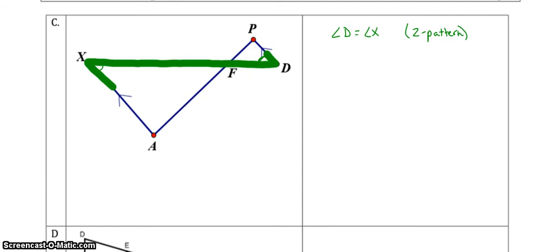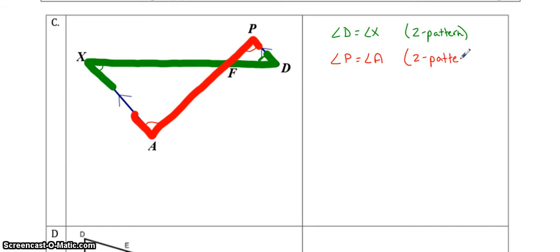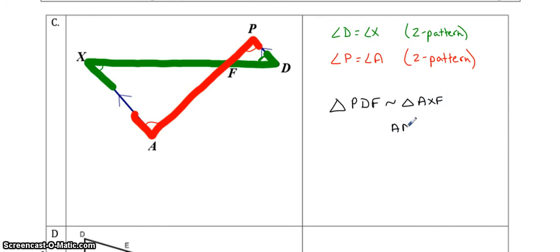You can find another Z pattern right here, and that tells you that angle P is equal to angle A, again because of the Z pattern. All you have to do is show that two angles are equal, because if two angles are equal they all have to add up to 180, so obviously the third one is equal. That means triangle PDF is similar to triangle AXF, and the reason is angle-angle similarity.